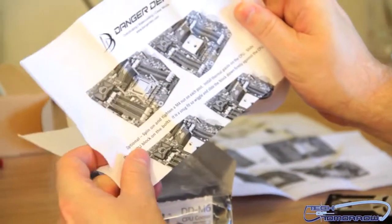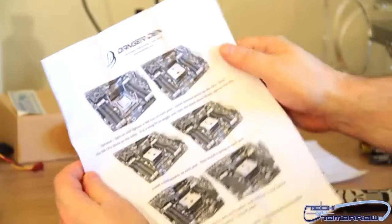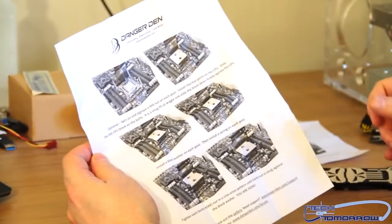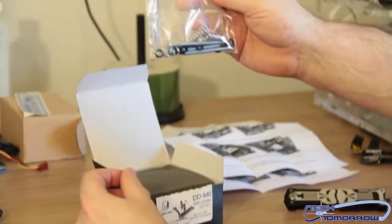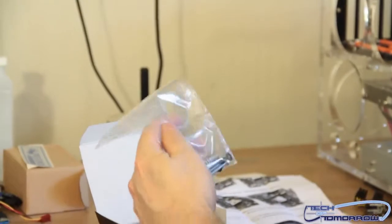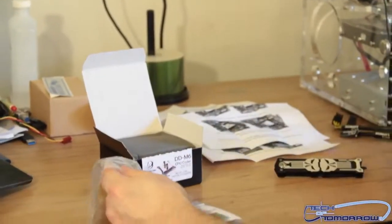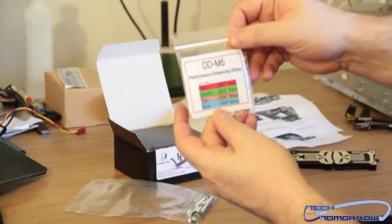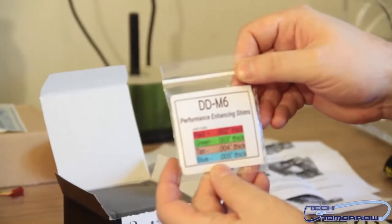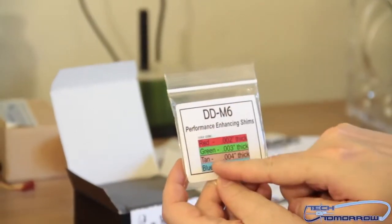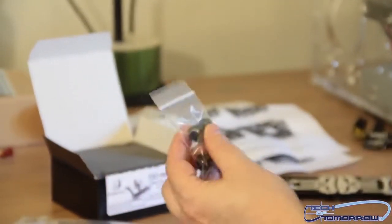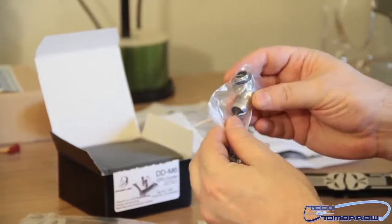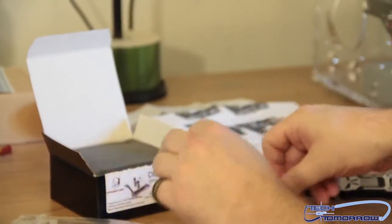Then we have the Danger Den overclocking water cooling case mods. Gives you even more information on how to change stuff. This is part of the mounting hardware right here. But then there's some awesome additional fittings. So I'm going to bring those into the light right here. These are the DD M6 performance enhancing shims. The different colors. I mean the different thicknesses. Here are where you connect your hoses and everything onto these. And then we have an additional one right here.